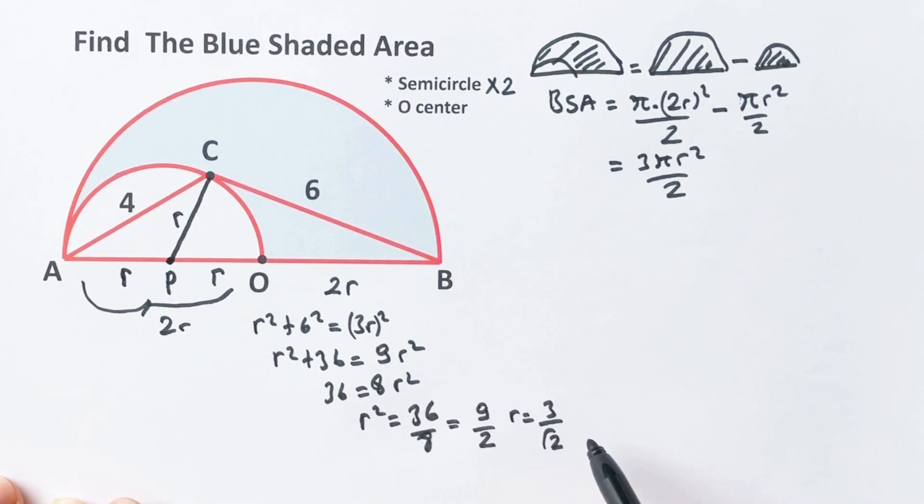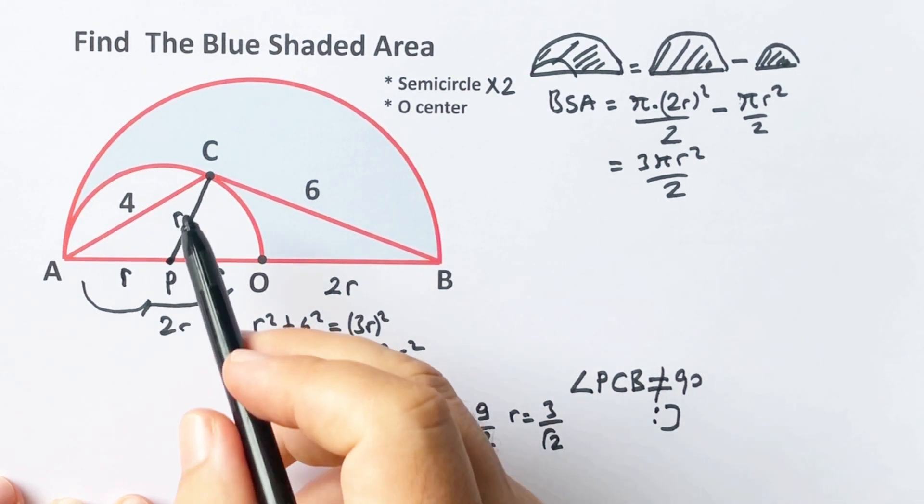Okay, if this triangle would be a right triangle, this result will be right, but we don't know if PCB angle is 90 degrees or not, so we must be careful. Let's continue.